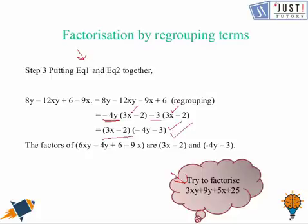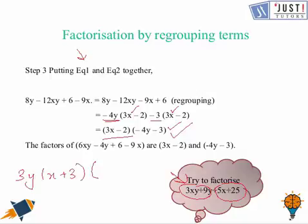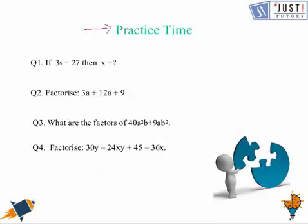Similarly, you can try and factorize the next question using regrouping. The first group and second group are identified. From the first group, 3y is common and we're left with (x + 3). From the second group, 5 is common and we're left with (x + 5). This gives the factored form of the expression.